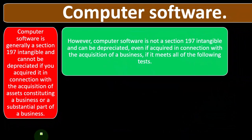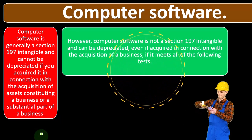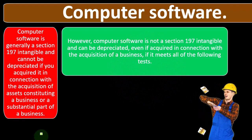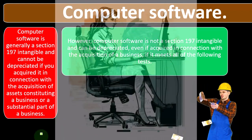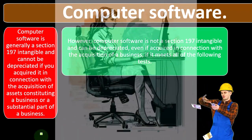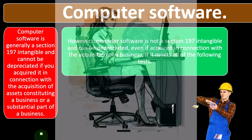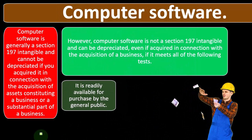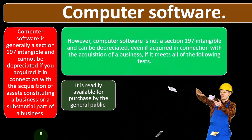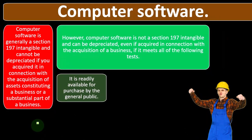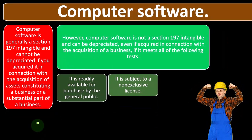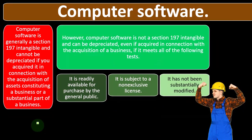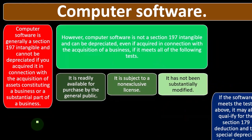However, computer software is not a Section 197 intangible and can be depreciated even if acquired in connection with the acquisition of a business, if it meets all of the following tests: it is readily available for purchase by the general public, it is subject to a non-exclusive license, and it has not been substantially modified.